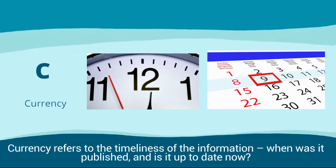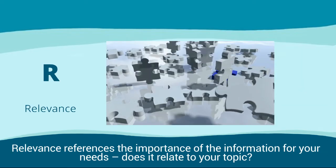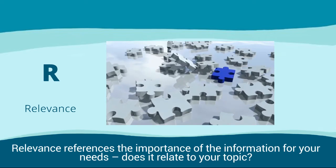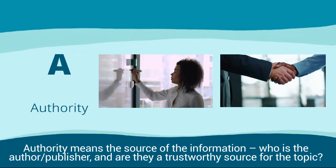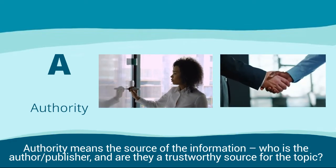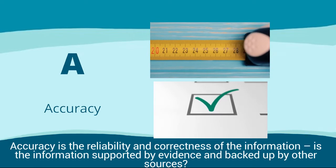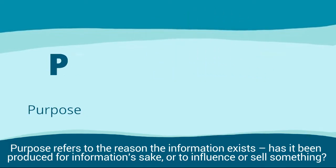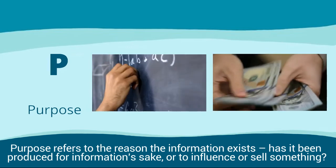Currency refers to the timeliness of the information — when was it published and is it up to date now? Relevance references the importance of the information for your needs — does it relate to your topic? Authority means the source of the information — who is the author or publisher and are they a trustworthy source for the topic? Accuracy is the reliability and correctness of the information — is the information supported by evidence and backed up by other sources? Purpose refers to the reason the information exists — has it been produced for information's sake or to influence or sell something?